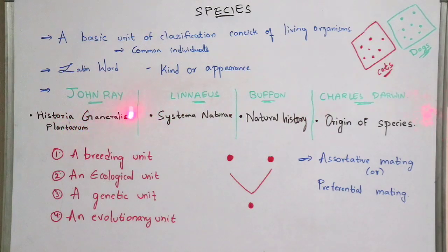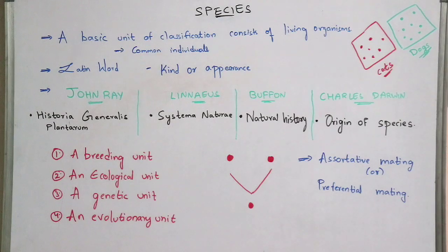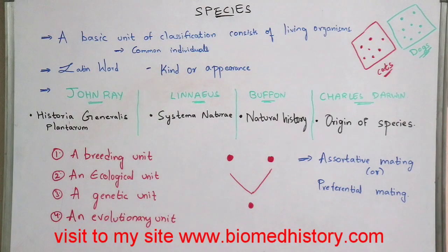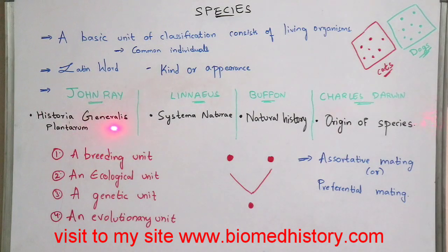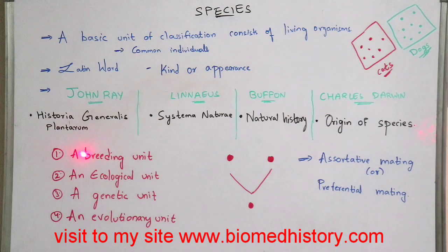The first scientist's name is John Ray, second is Linnaeus, third is Buffon, and fourth is Charles Darwin. The book written by John Ray is Historia Generalis Plantarum. The main purpose of that book is that he used the term 'species' and described it on the basis of the common descent of morphologically similar organisms. That is, the book consists of information on morphologically similar organisms.